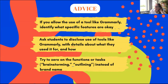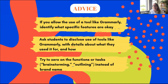My advice throughout the year, after the Grammarly presentation, was: how are we going to keep on top of all these constantly changing tools? My advice is to zero in on the functions or tasks of the tools — like brainstorming, like outlining — instead of the brand name. So on an assignment, if you say 'you are not permitted to use generative AI tools of any kind for brainstorming, you should do that on your own,' then we have clear guidance for students without attaching to a particular brand name whose functions might be changing all the time.